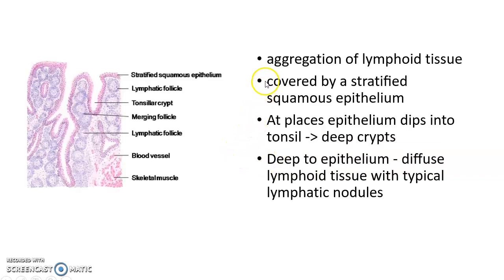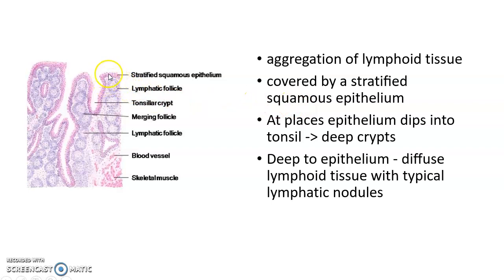Palatine tonsil consists of an aggregation of lymphoid tissue. The main feature of palatine tonsil is that it is covered by stratified squamous epithelium. As you can see in this picture, it is covered by stratified squamous epithelium.